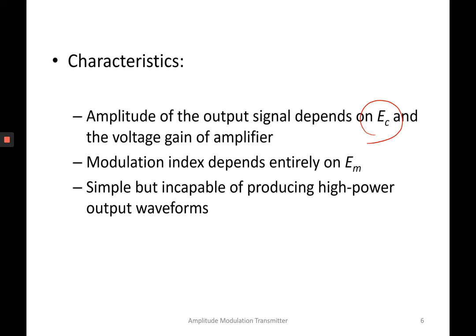The characteristic of this low-level modulating circuit is that the amplitude of the output signal depends on the carrier amplitude as well as the voltage gain of the amplifier. But the modulation index depends entirely on the modulating signal amplitude. This circuit is very simple, but it is not capable of producing high-power output waveform — just very low power.